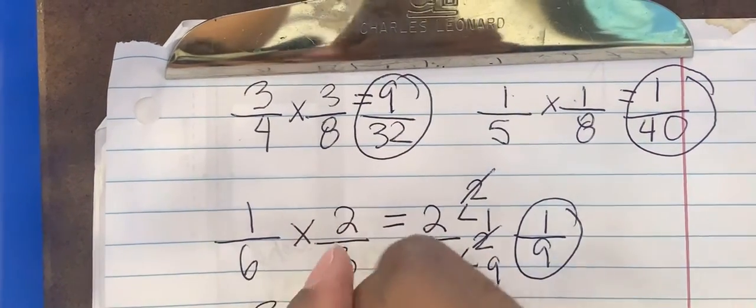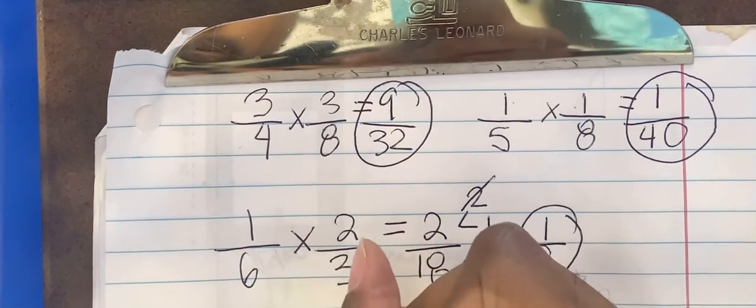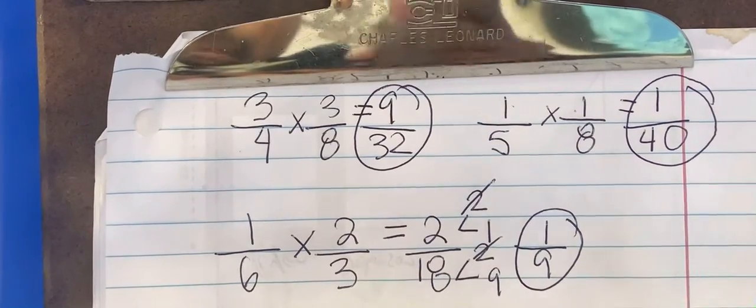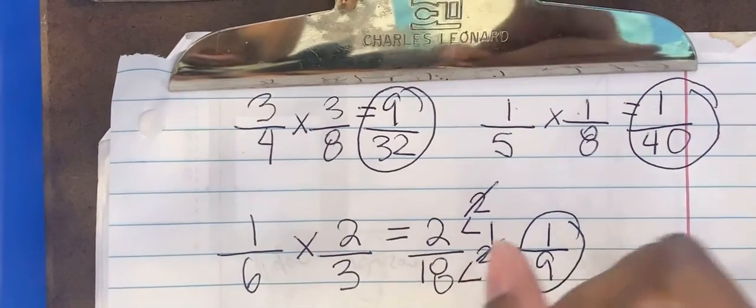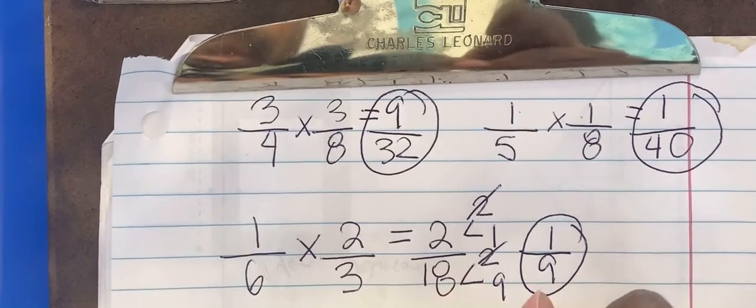Let's do 3 over 5 multiplied by 2 over 7. We multiply the numerators. 3 multiplied by 2 is 6. 5 multiplied by 7 is 35.